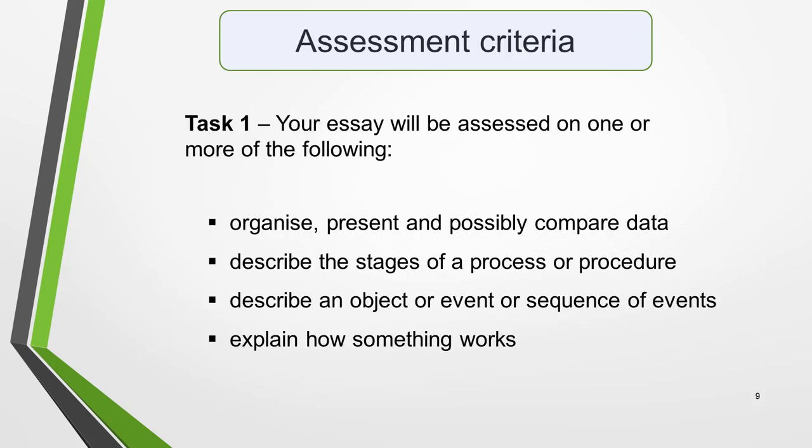The two parts of the Academic Writing Test are designed to assess your ability in different skill areas. The assessment criteria for any specific question will depend on the type of task you're asked to complete, but here's a general overview. Don't worry if it seems a little overwhelming. For Task 1, your essay will be assessed in relation to your ability to organise, present and possibly compare data; describe the stages of a process or procedure; describe an object, event or sequence of events; or explain how something works.